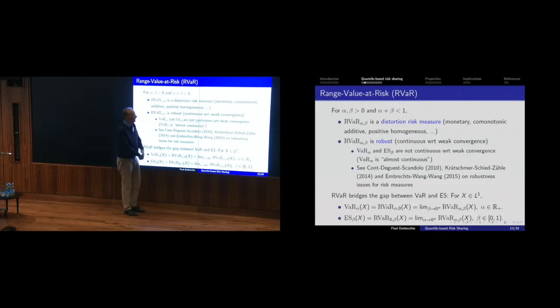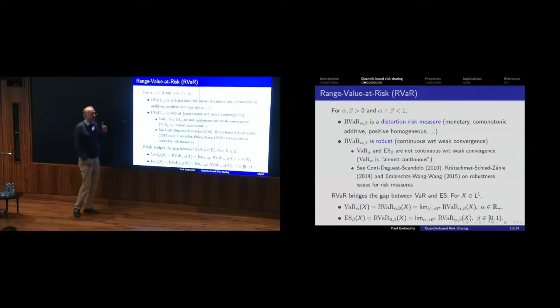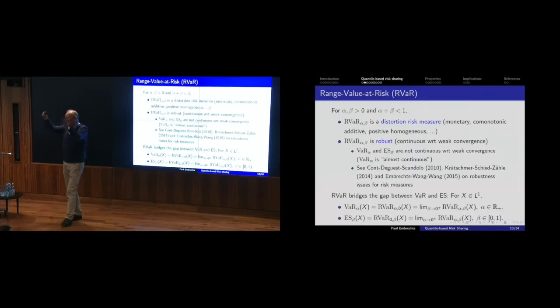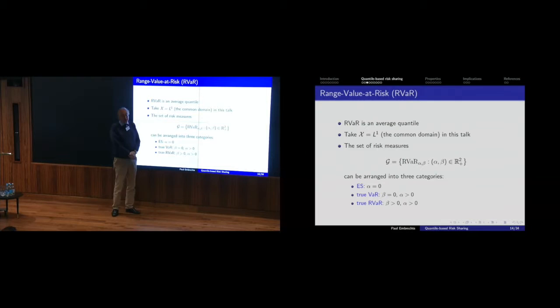The boundary cases — pure VaR and pure Expected Shortfall — are not continuous with respect to weak convergence. This has been generalized by Kretschmer, Schied, and Zähle, and we have contributed on robustness of risk measures. For me, much more important is that our two key risk measures appear as boundary cases in this two-parameter family — it's just a nice set environment around VaR and Expected Shortfall. Range VaR is an average over a quantile range. Even discrete averages of VaRs have been used: Nassim Taleb once suggested a three-point average of VaRs as a risk measure.